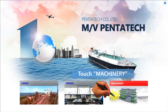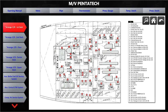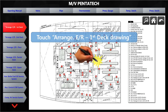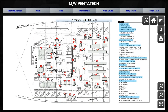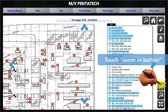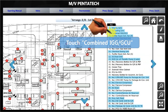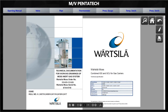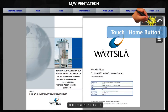To access a vendor manual using arrangement drawings, touch the Machinery button on the category screen. You can see the system index on the left and the arrangement engine room first deck drawing on the right. Touch any place of the drawing to view it in full screen, then touch the zoom-in button to select equipment. Select equipment on the arrangement drawing to see its vendor manual. After checking the vendor manual, touch the Home button to return to the category screen.